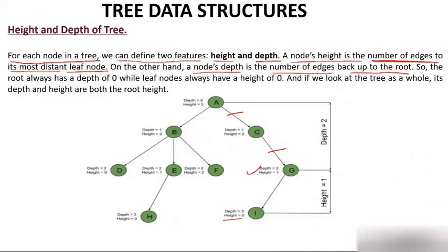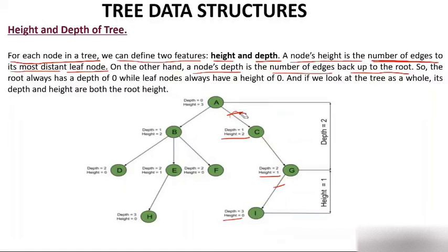Now consider node G. Depth is always considered from the top root node, so the number of edges to reach G from root is 1, 2 — depth is 2. The number of edges below G is 1, so height is 1. Now take node C: depth is 1. For height, moving down to the maximum leaf from C takes 1, 2 edges — so height of C is 2.